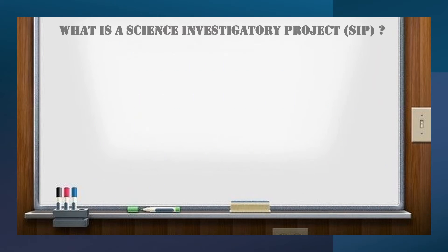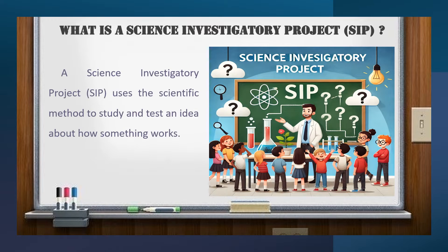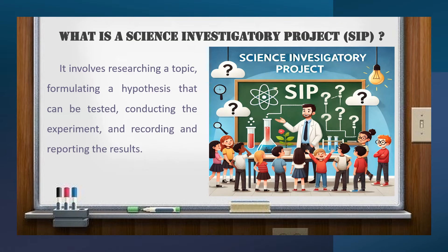What is a science investigatory project? A science investigatory project uses the scientific method to study and test an idea about how something works. It involves researching a topic, formulating a hypothesis that can be tested, conducting an experiment, and recording and reporting the results.